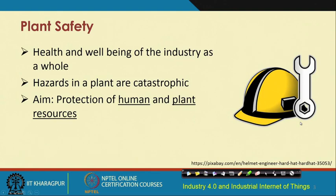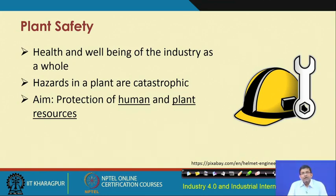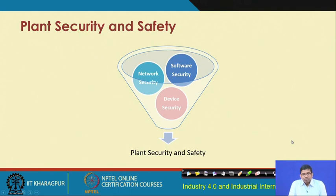When we are talking about plant safety specifically, as I said before, there are two entities: humans and plant resources. Their safety and well-being is very important. It is also very important to ensure that different machinery do not malfunction and cause hazards to the workers working surrounding or along with those machinery. So plant safety is very, very important, and these are the three main things to consider.